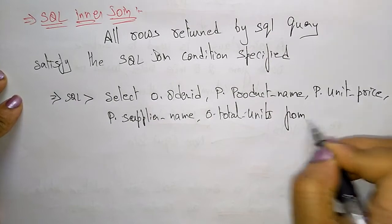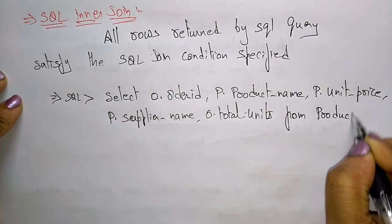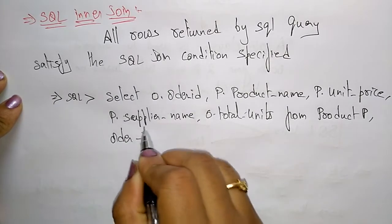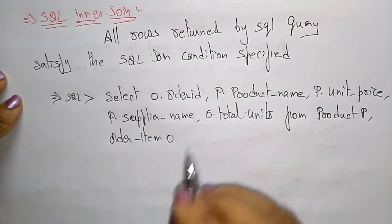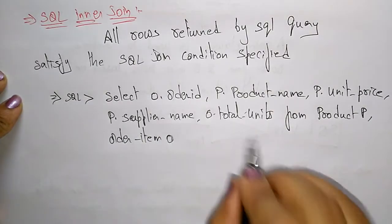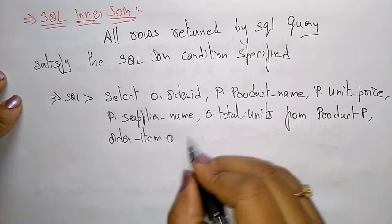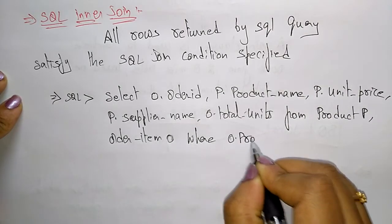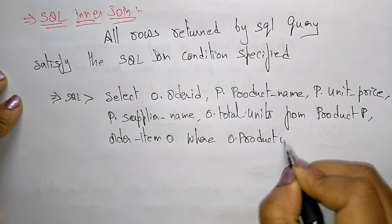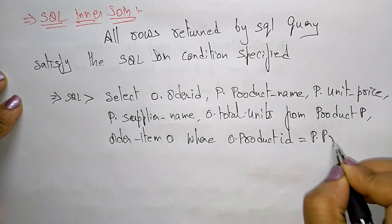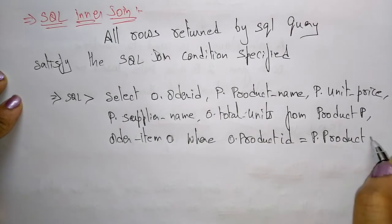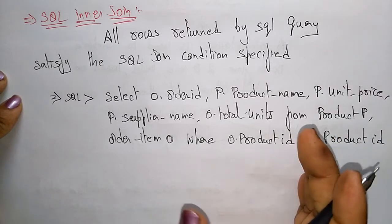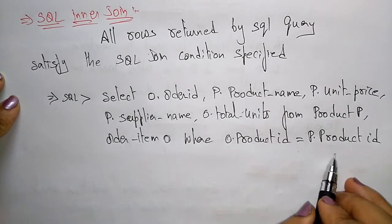These fields are selected FROM product p and order item o tables. I have to specify the condition because this is an SQL inner join: WHERE o.product_id = p.product_id. This means I have to select those rows where both product IDs are equal.